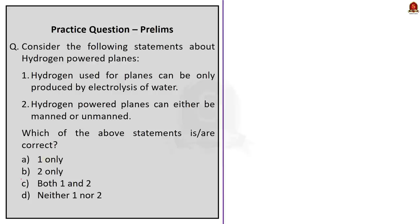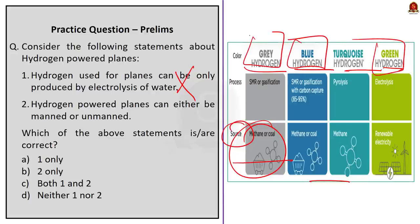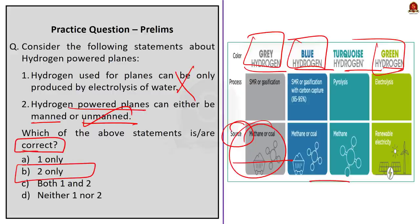The second question is also a two-statement question. The first statement is incorrect because hydrogen can also be produced by reforming methane from natural gas. Looking at the image, you can see the different types of hydrogen produced from different sources — green hydrogen, blue hydrogen, gray hydrogen, etc. The second statement is correct — hydrogen-powered planes can either be manned or unmanned. Since the question asks for correct statements, the answer here is Option B: two only.